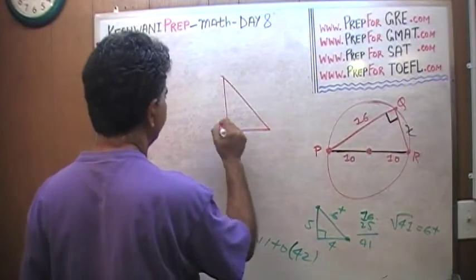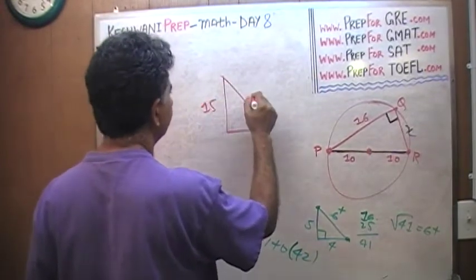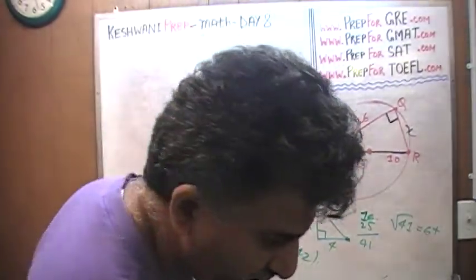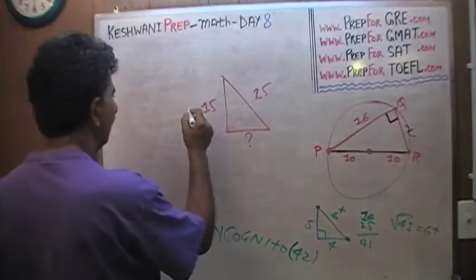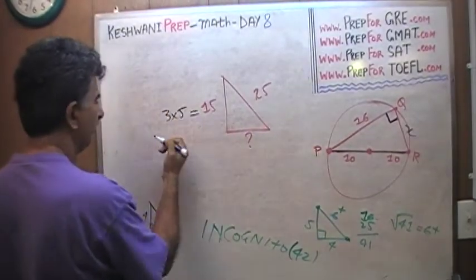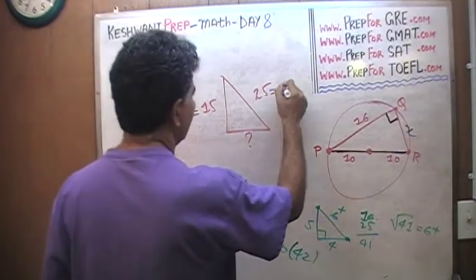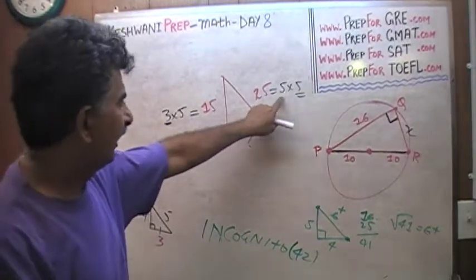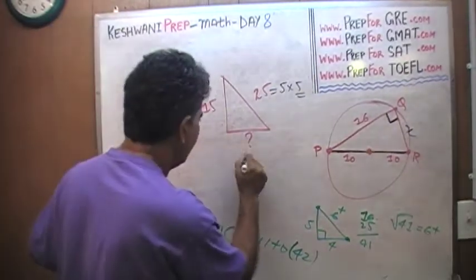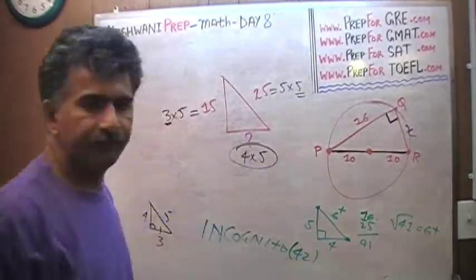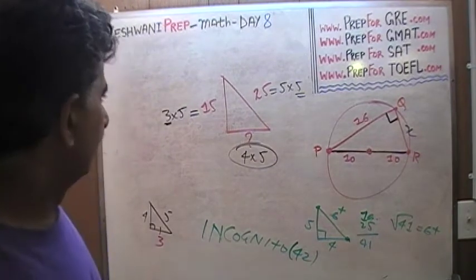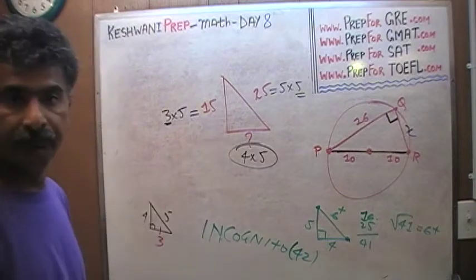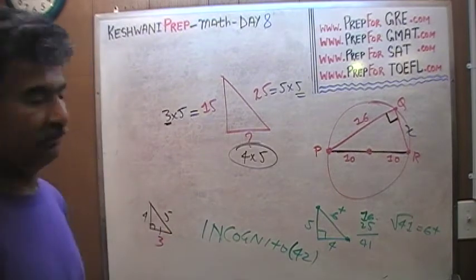Another example: a right triangle with one leg 15 and hypotenuse 25. I see 15 = 3×5 and 25 = 5×5. The common multiple is 5. So the missing leg must be 4×5 = 20. It's a 3-4-5 triangle incognito, magnified five times.